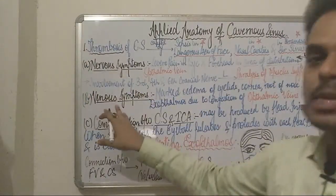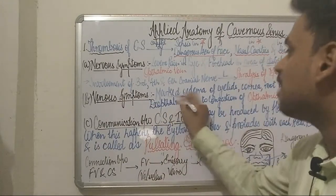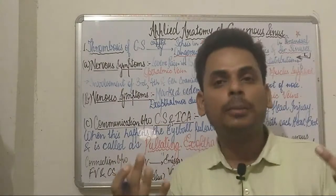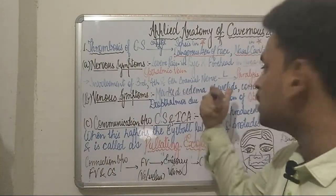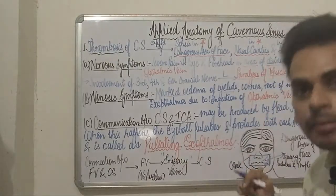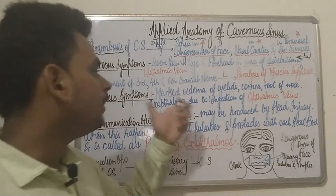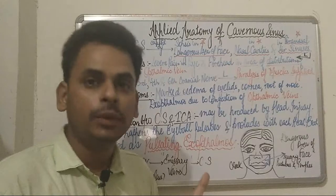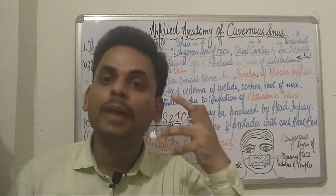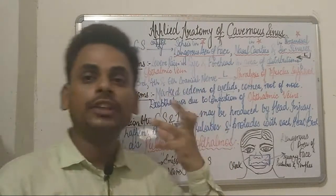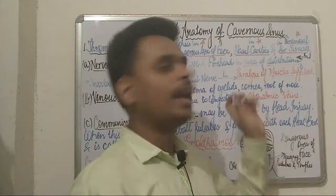The venous symptoms manifest in the form of marked edema of the eyelids and edema of the cornea. The root of the nose can also get affected. Additionally, exophthalmos — a protruded appearance of the eyeball — can occur, and this is mostly due to congestion of the ophthalmic veins.